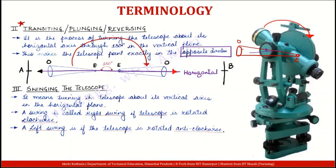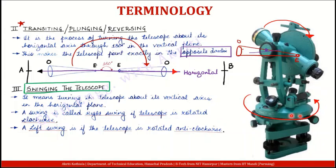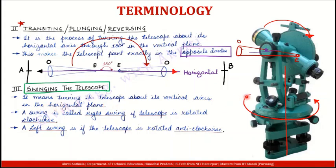Ab baat aati hai next very important term ki — Swinging. Swinging mein aapka jo telescope hai usko hum horizontal plane mein rotate kar rahe hain. Jub aap theodolite ko is tarah se rotate karte hain in the horizontal plane, ab circle aisa ban raha hai — horizontal circle ban raha hai — aur rotation vertical axis ke about ho rahi hai. To is axis ke about rotate kar rahe hain aur horizontal plane mein rotate kar rahe hain — usse kya bola jata hai — Swinging bola jata hai. So it means turning the telescope about its vertical axis in the horizontal plane.